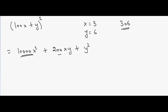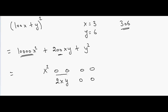So x squared goes in the leading positions, 2xy occupies the next two digits, and y squared occupies the last two digits. They are then added together with any carry-over to form the final result.